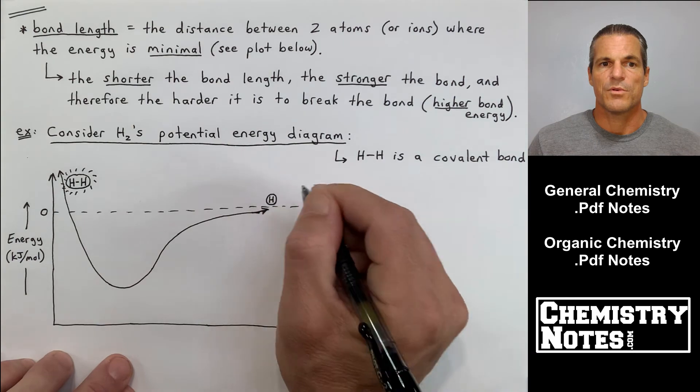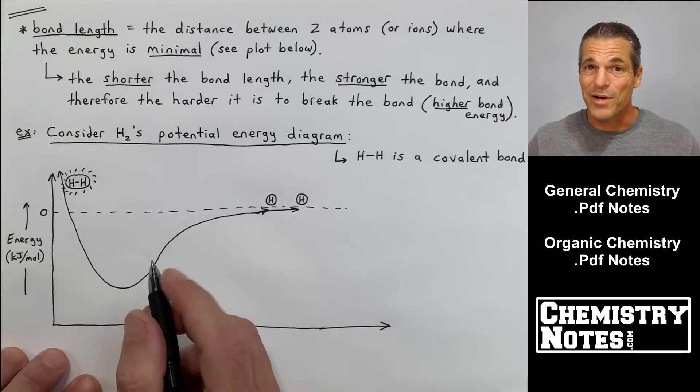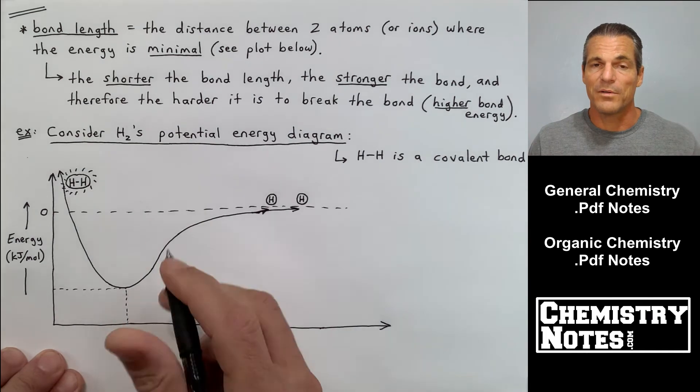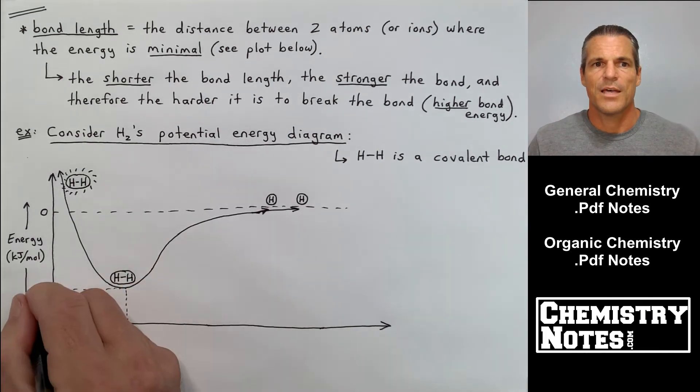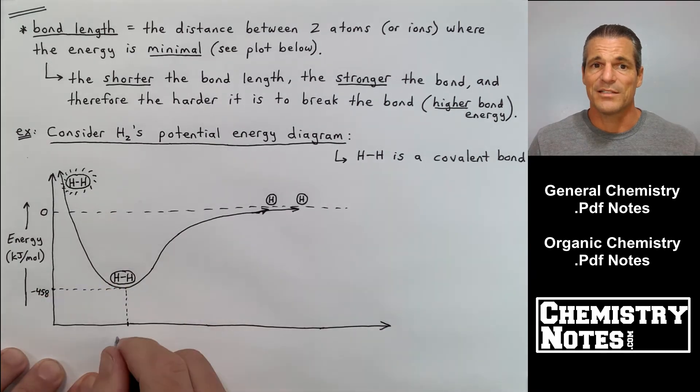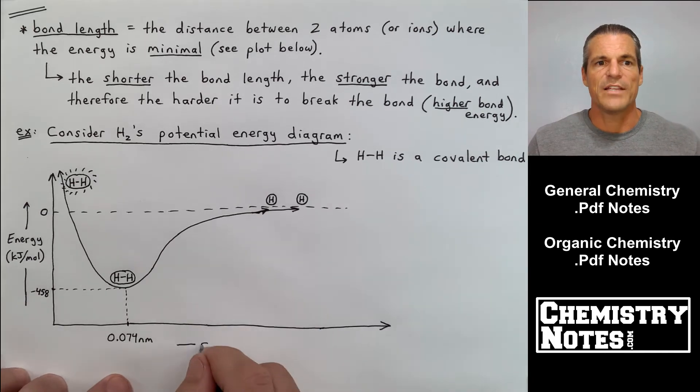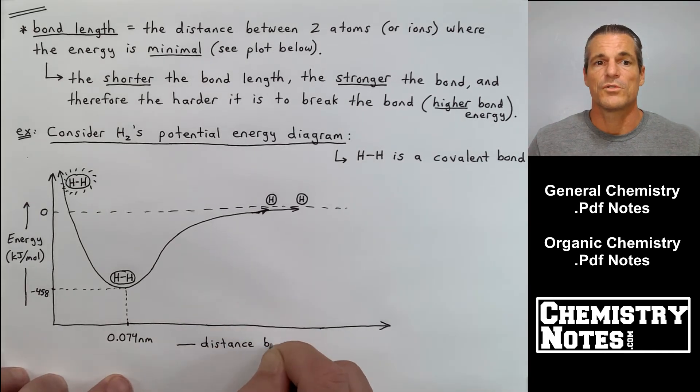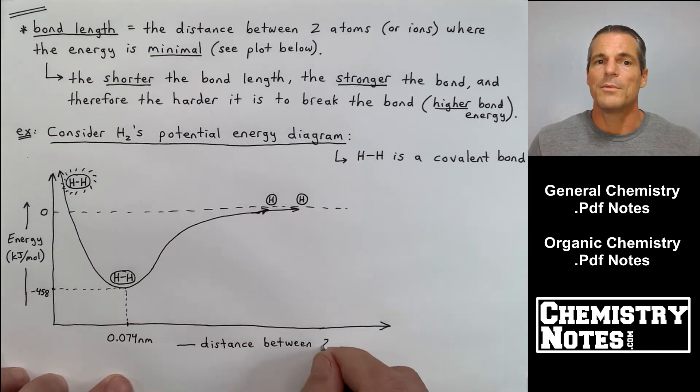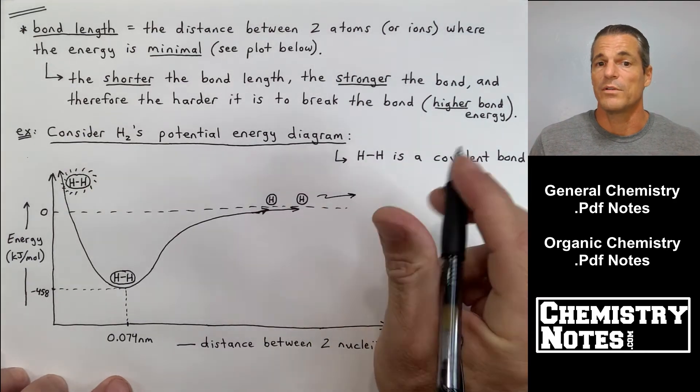The H atoms on the upper left are too close together. We don't want those two nuclei that close because the nucleus is a plus and a plus. Down at the bottom of the trough at -458 kilojoules per mole, we have optimal bond length, and that optimal bond length is 0.074 nanometers.